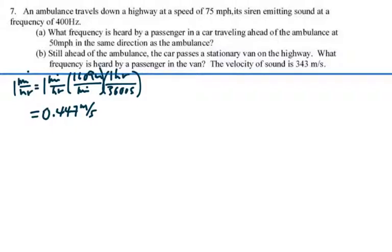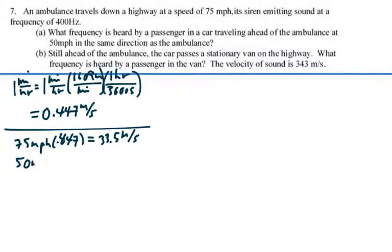In other words, we convert miles per hour to meters per second by multiplying by 0.447. So 75 miles per hour times 0.447 equals 33.5 meters per second, and 50 miles per hour times 0.447 is 22.35 meters per second.